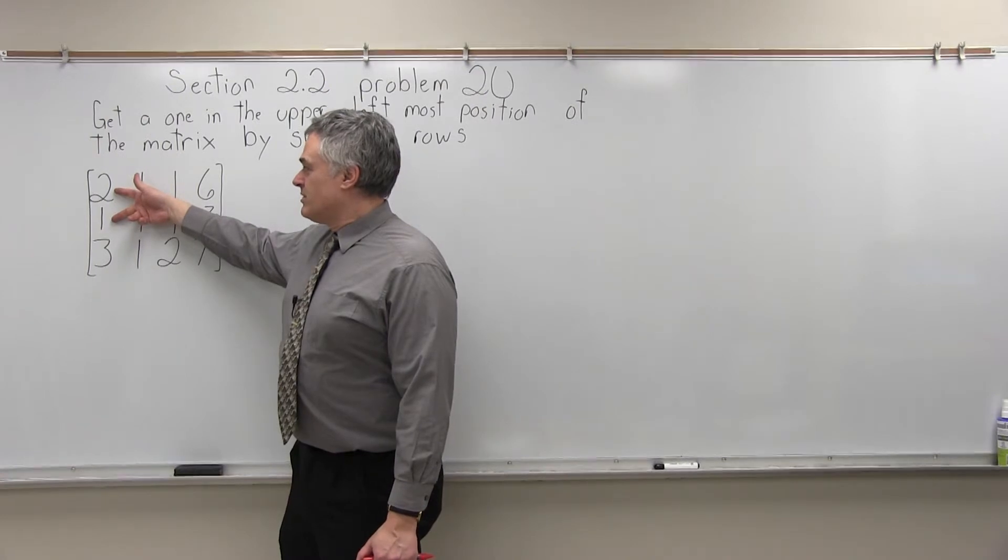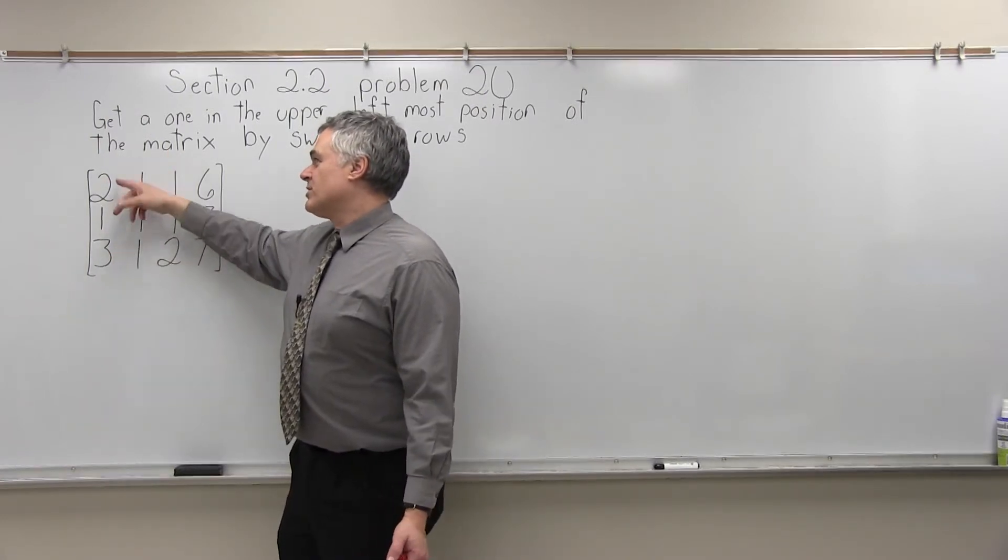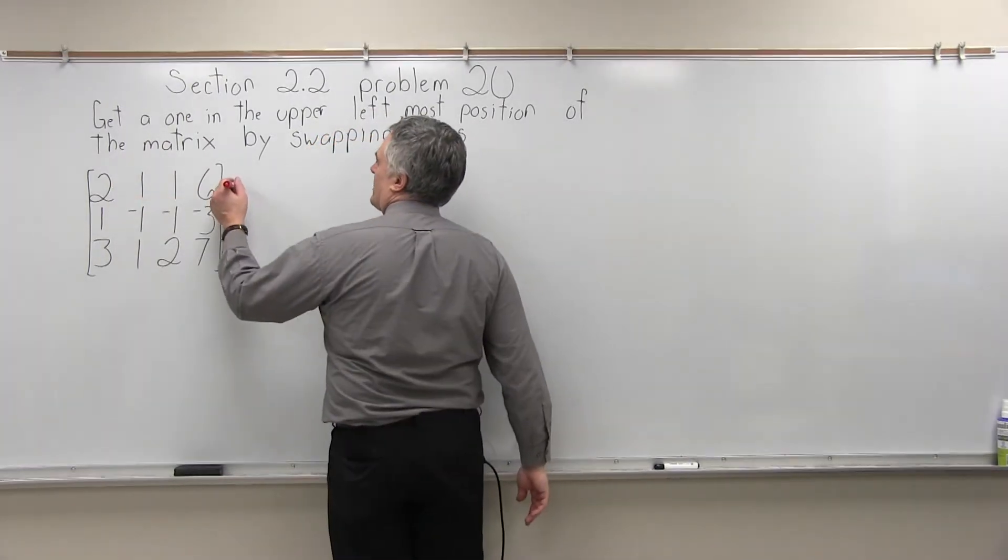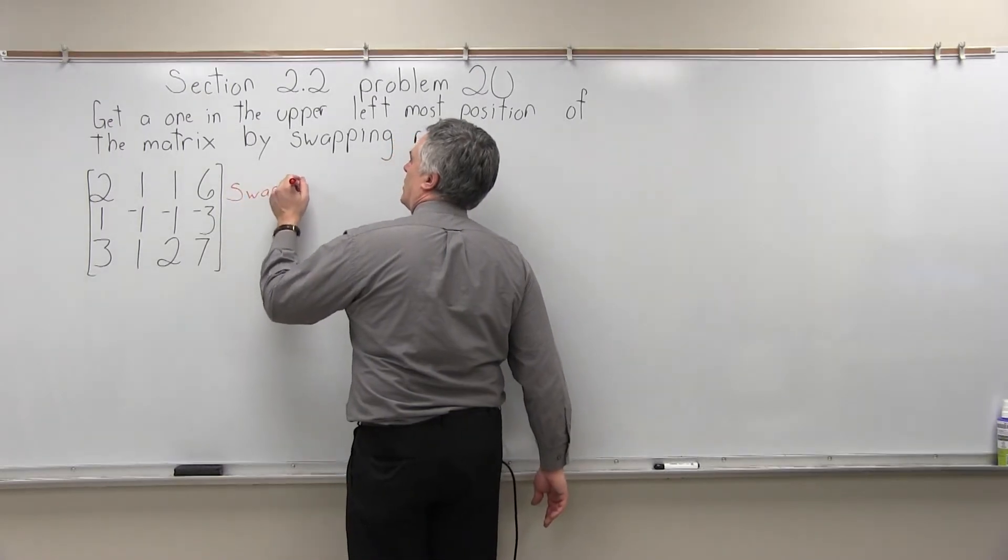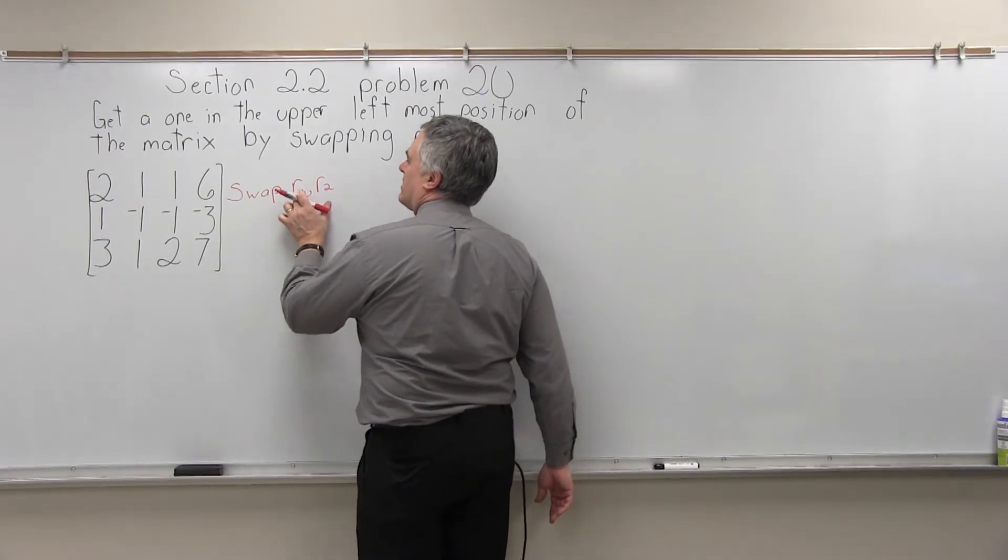So the rows to swap would be row 1 and row 2, though swapping row 3 would put a 3 in that upper leftmost. So what we want to do is swap row 1, row 2. It's always a legal move to swap rows.